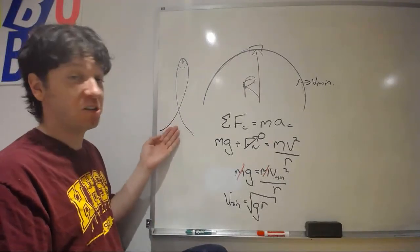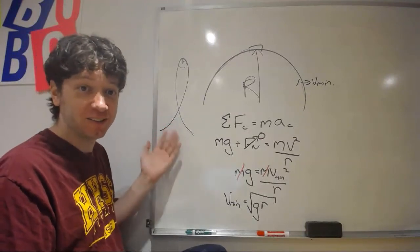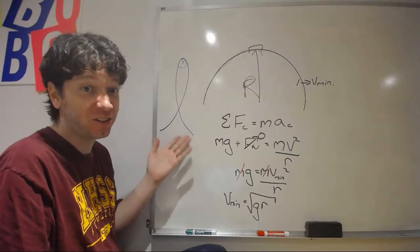So, this is called a clothoid loop, and it's the only loop that you'll see now in amusement parks, because it's a lot safer.